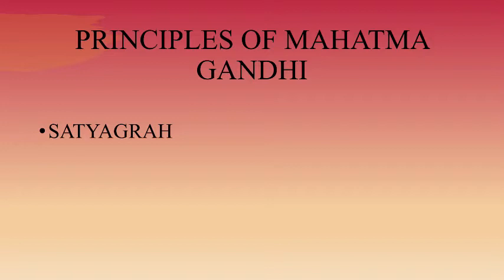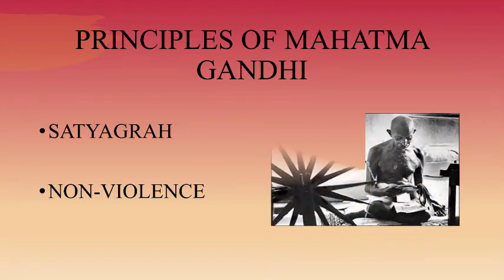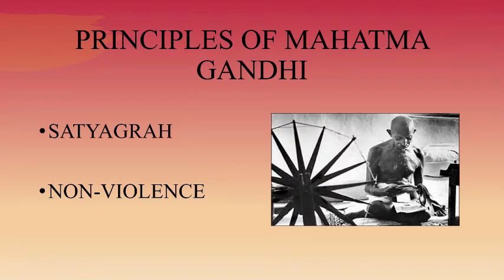Gandhi's method of fighting was based on two principles: Satyagraha and non-violence. According to him, if the struggle is against injustice, there is no need to use physical force. Instead, the oppressor should be persuaded to see the truth without being violent — ultimately, truth is bound to win. He believed that the principle of non-violence would unite all Indians.